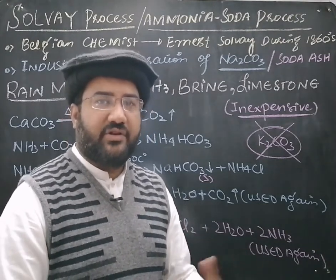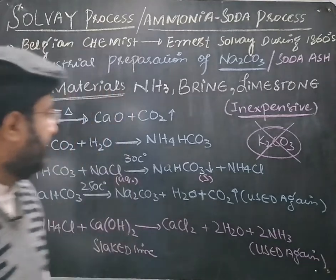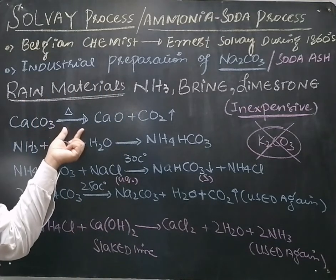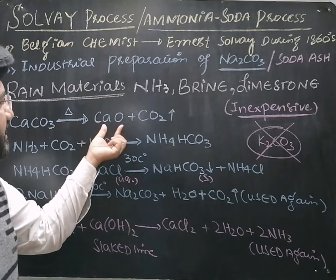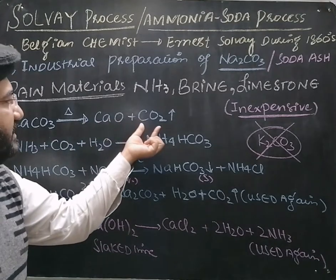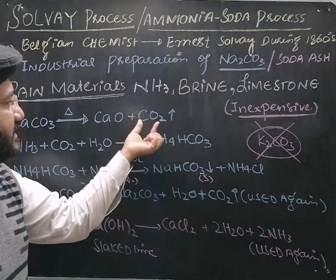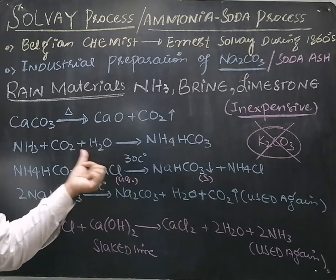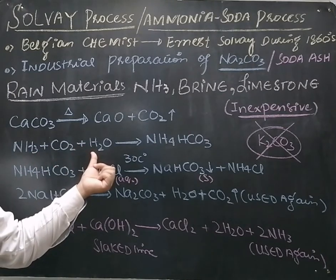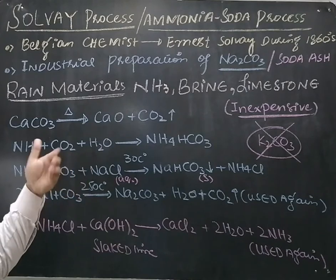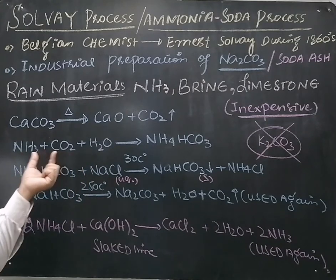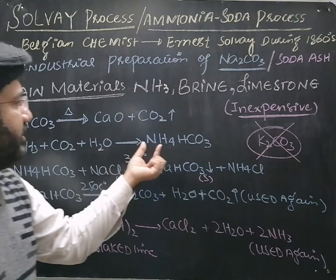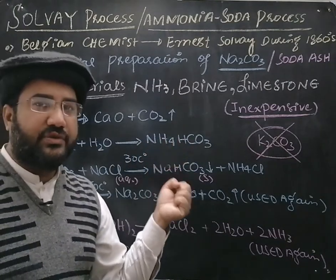Now let us look into the chemistry of the process. First, limestone or calcium carbonate is thermally decomposed to produce calcium oxide and CO2 gas. This carbon dioxide gas is then passed through the aqueous solution of ammonia, also called ammonium hydroxide, to produce ammonium bicarbonate.